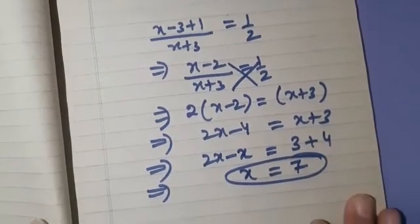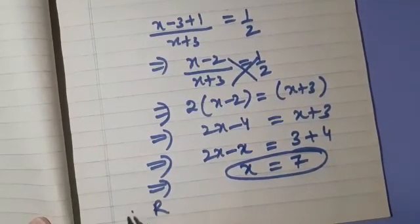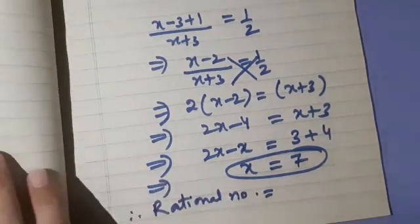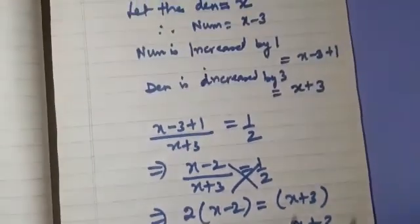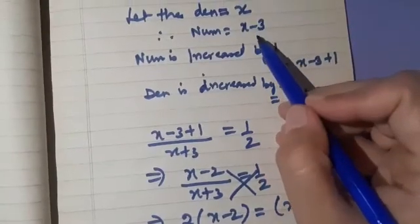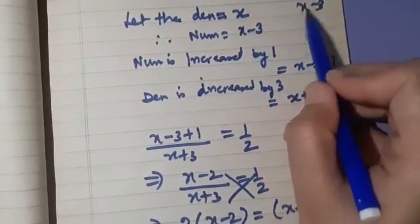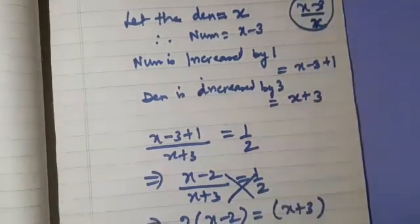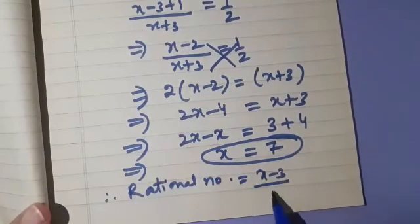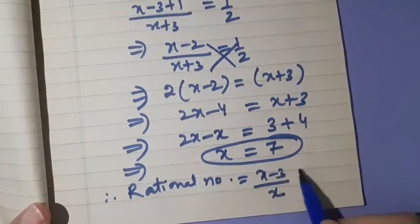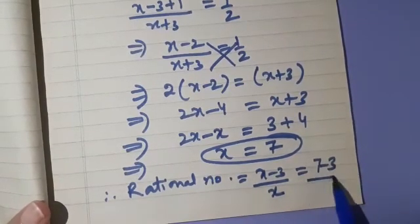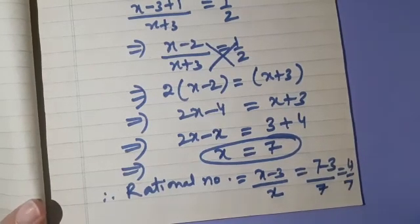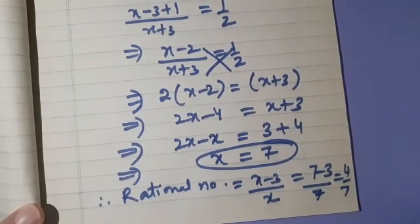Now when x equals 7, what is the rational number? We assumed the denominator as x and the numerator as x minus 3. So the rational number is x minus 3 upon x, that is 7 minus 3 upon 7. The answer is 4/7. I hope this question is clear to you.